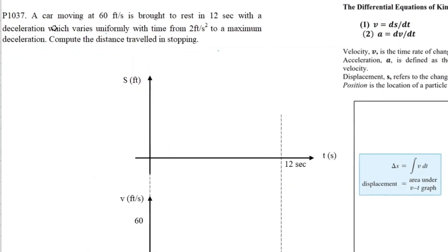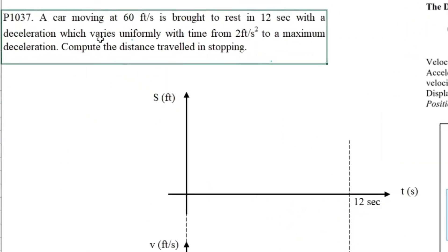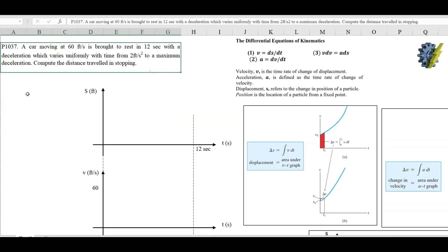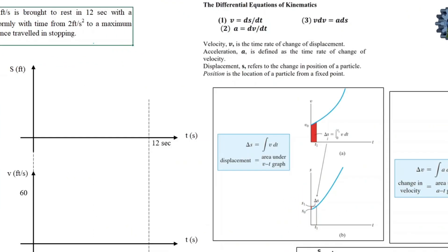Hello everyone, welcome to my channel. This is our next problem — a special request. Problem number 1037: a car moving at 60 feet per second is brought to rest in 12 seconds with a deceleration which varies uniformly with time from 2 feet per second squared to a maximum deceleration. We are asked to compute the distance traveled in stopping the car.